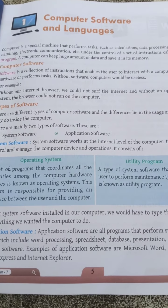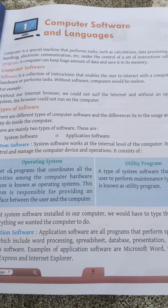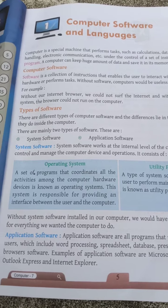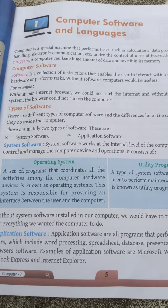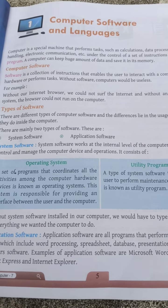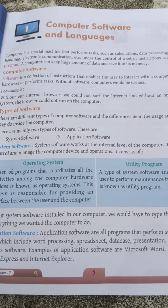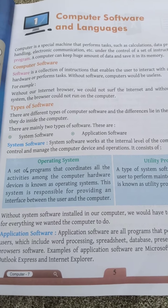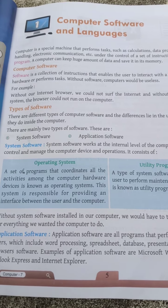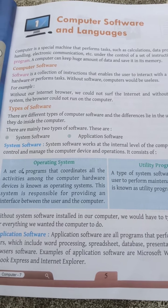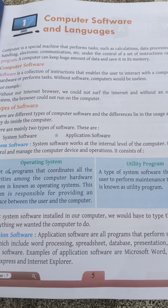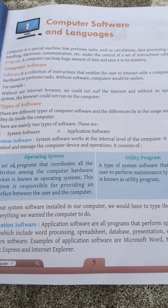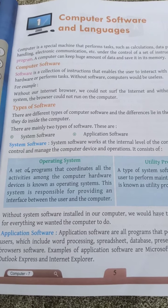In this chapter, we are talking about types of software: system software and application software — these are the two types. System software, as the name indicates, is some software needed for the system. System means the computer itself. In school level we say computer; in IT firms they say system — same thing. Software that is needed for the system to work properly is called system software.